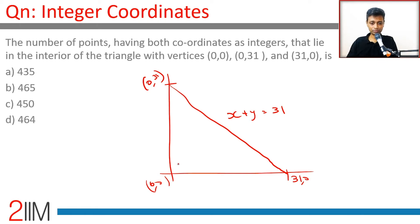You could put x equal to 1, and y could go all the way till 29. When x is 1, y could go from 1, 2, 3 till 29. x plus y would still be less than 31.